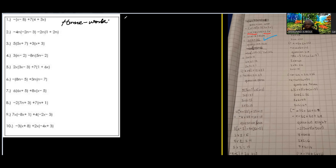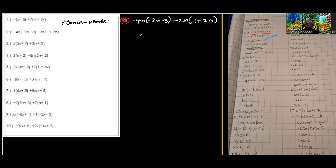For the second question, let's check: negative 4n into negative 2n minus 3, then close the bracket, minus 2n into 1 plus 2n. Step by step: negative times negative is positive, so 4 times 2 is 8, and n times n is n squared — please take note of this.